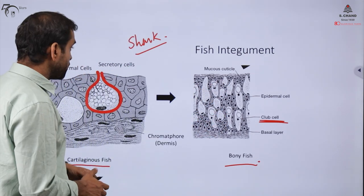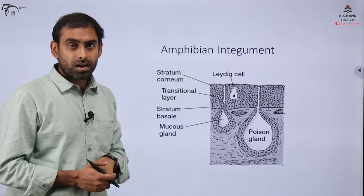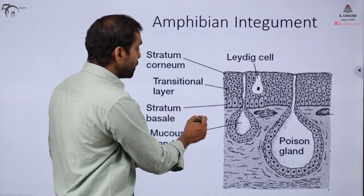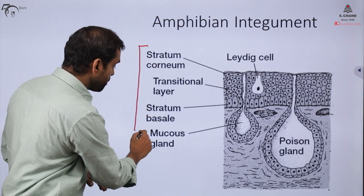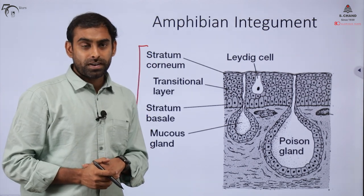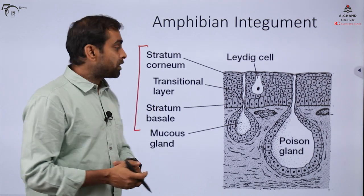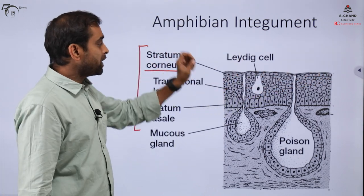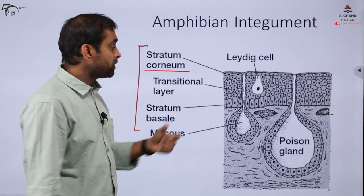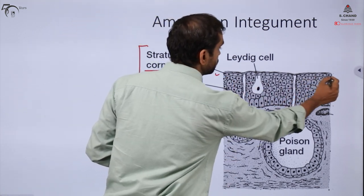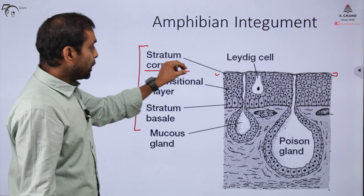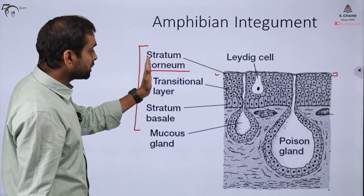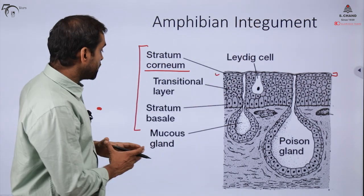Moving to the amphibian integument, we find more diversity. The layers of the epidermis have been further subdivided. There is a tough outer layer because of a thin layer of transversely arranged epithelial cells called stratum corneum, which remains persistent across other taxons. Then there is a transitional layer with a homogeneous population of cells and some specialized ledic cells. Below this is the stratum basale, which is also persistent across taxons.